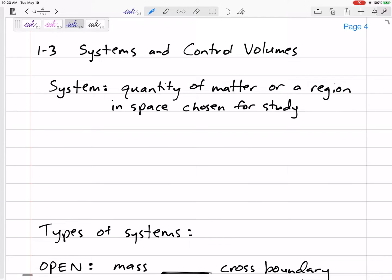A system is a quantity of matter or a region in space chosen for study. So we have our system - it might be this fluid right here, that is my system. But it could be a tank, you know, this area, this volume is my system.